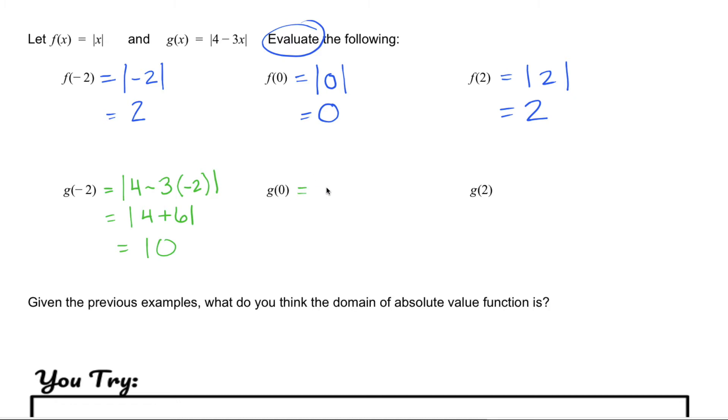G of zero. So that would be the absolute value of four minus three times zero, which is just the absolute value of four. And how far away is four from zero? Four.